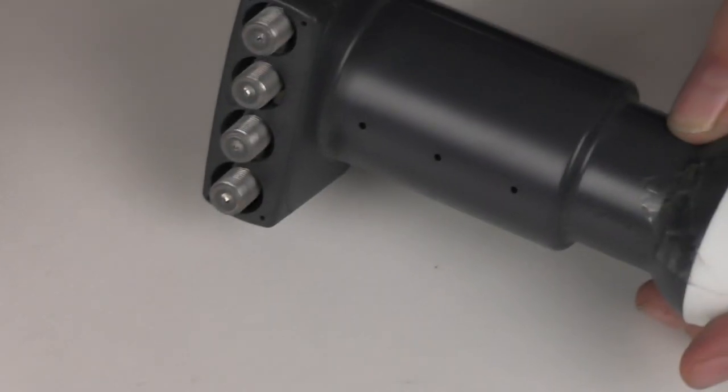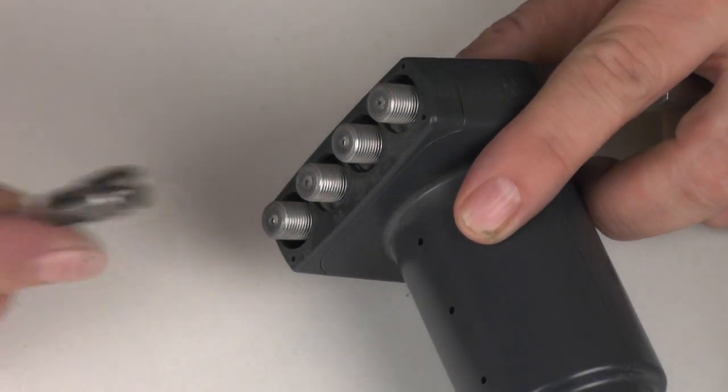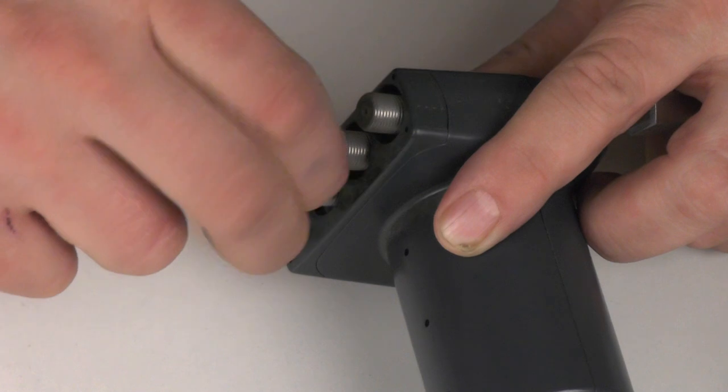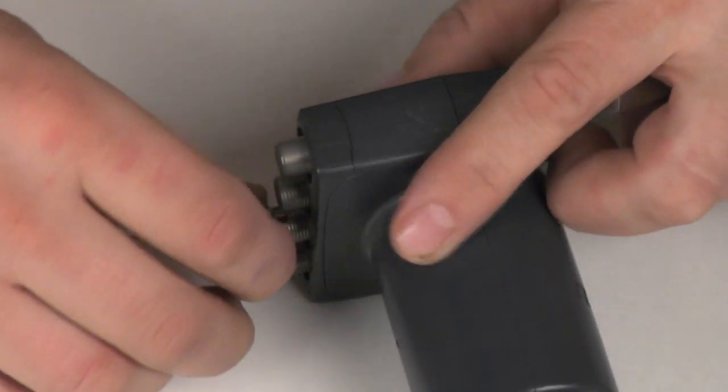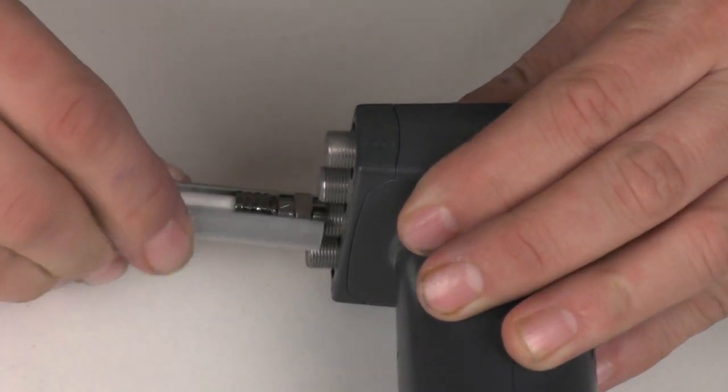So to fit the connector onto an LNB, again it's quite straightforward. We can take the connector to the port. Again, maybe giving it a little turn just to get it started, get the thread going. Take the tool, put it on, and then start turning round.